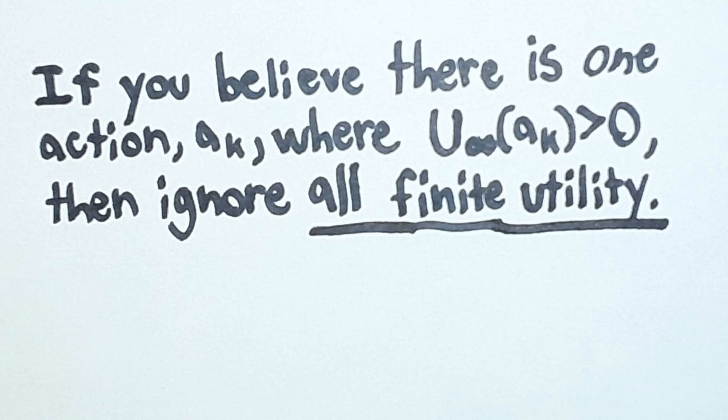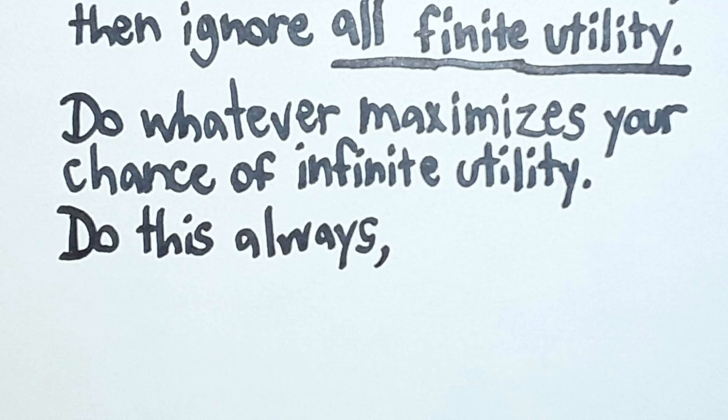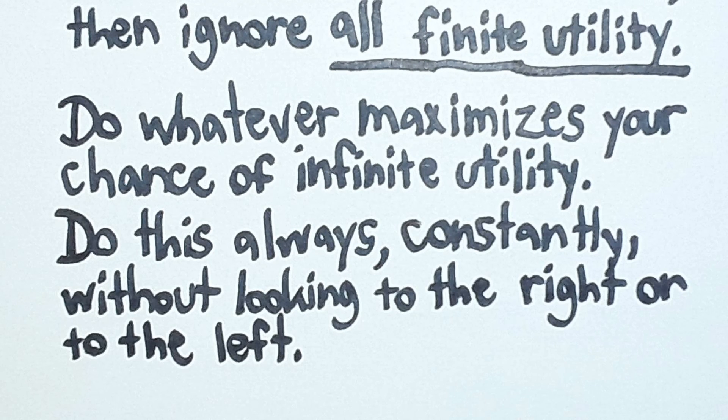As long as you believe that there is one action, AK, which has a non-zero chance of giving infinite utility, then ignore all finite utility. Do whatever maximizes your chance of infinite utility, and do this always, constantly, in every decision, going straight for the infinite without looking to the left or to the right at the finite.